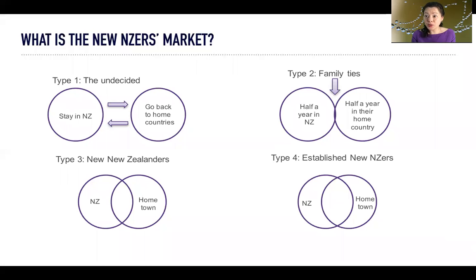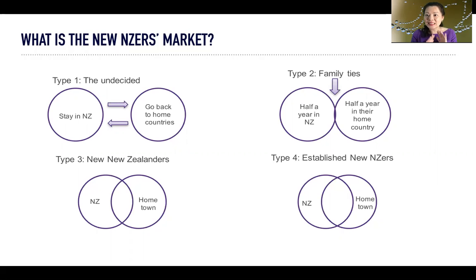Even this market — we might call it 'rich Asian' — it's still very hard to decide and to engage with them, because their priority is to decide where they're going to reside. So type two is the family ties.